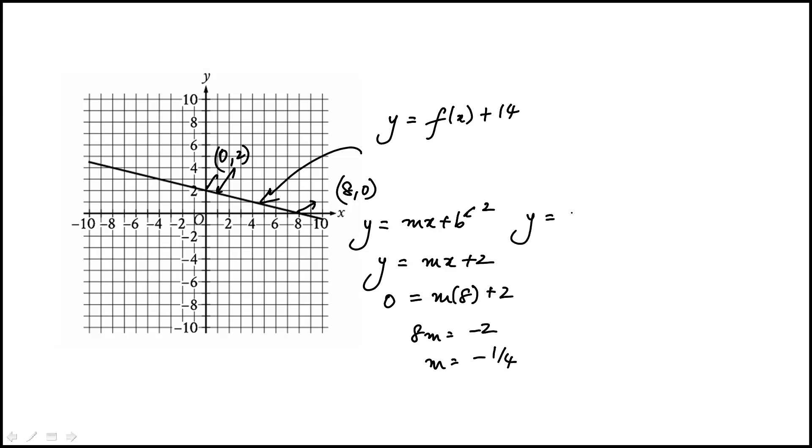So the equation of y is minus 1 fourth x plus 2, and with that we can find out what f of x is. So that would be minus 1 fourth x plus 2 minus 14, and that simplifies to this, which matches with answer choice a.